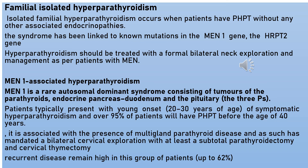MEN type 1-associated hyperparathyroidism — MEN type 1 is a rare autosomal dominant syndrome consisting of tumors of the parathyroid, endocrine pancreas, duodenum, and pituitary, also known as the 3 P's. Patients typically present with young onset (20 to 30 years old) symptomatic hyperparathyroidism, and over 95% of patients will have primary hyperparathyroidism before age 40. It is associated with multi-gland parathyroid disease and mandates bilateral cervical exploration with at least subtotal parathyroidectomy and cervical thymectomy. Recurrent disease remains high, up to 62%.